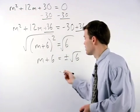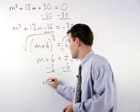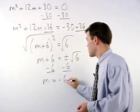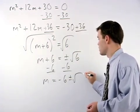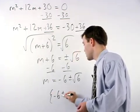To get m by itself, we subtract 6 from both sides and we have m equals negative 6 plus or minus root 6, and let's write our answer in set notation.